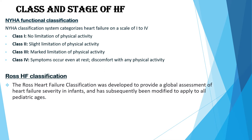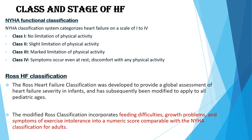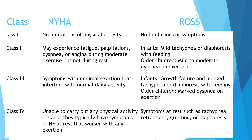The Ross Heart Failure classification was developed to provide a global assessment of heart failure severity in infants and has subsequently been modified to apply to all pediatric ages. The modified Ross classification incorporates feeding difficulties, growth problems, and symptoms of exercise intolerance into a numeric score comparable with the NYHA classification for adults. Ross Class 1 is no limitation or symptoms. Class 2 in infants includes mild tachypnea or diaphoresis with feeding; older children may have mild to moderate dyspnea on exertion.